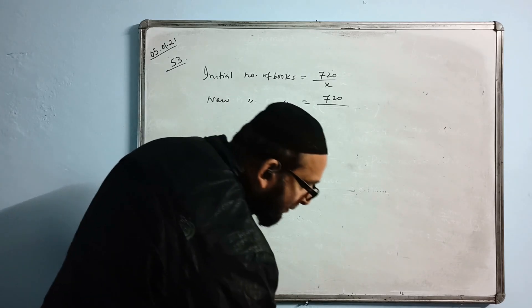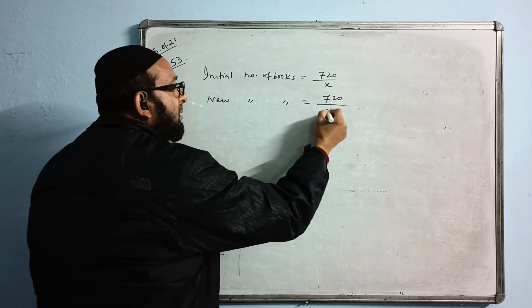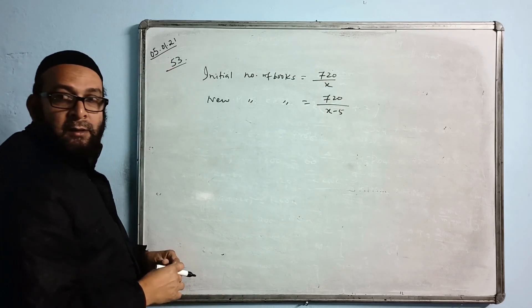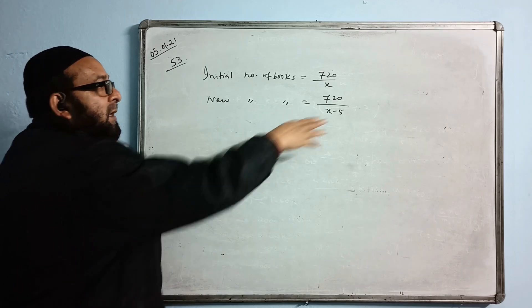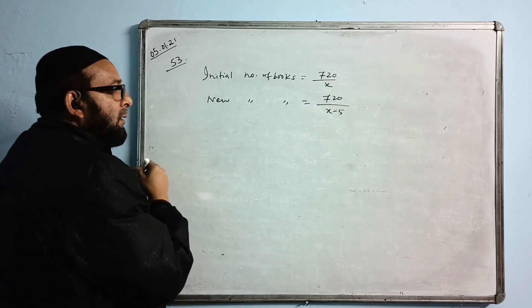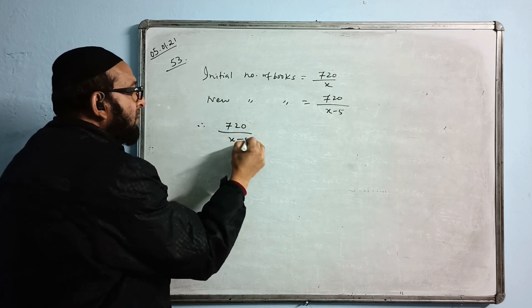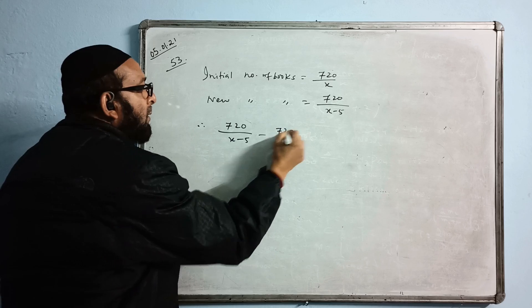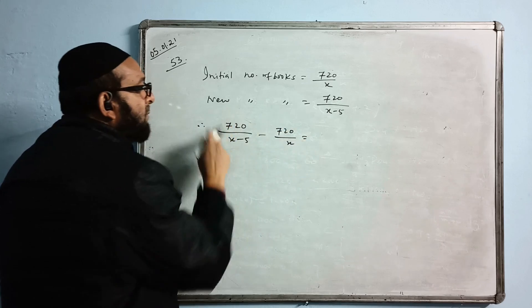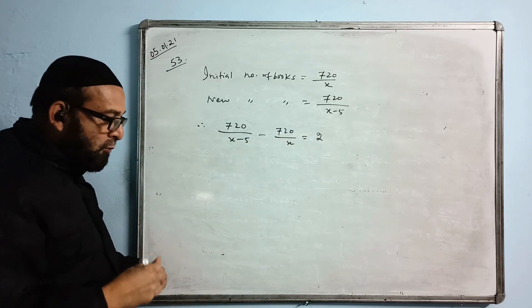They are saying Rs. 5 less. So it is X minus 5. This many books you will get. Which is bigger? X minus 5 is bigger or X is bigger? This one. Therefore, the new one is bigger. This minus this one is equal to 2. The difference of the number of books is 2. Then you solve it.